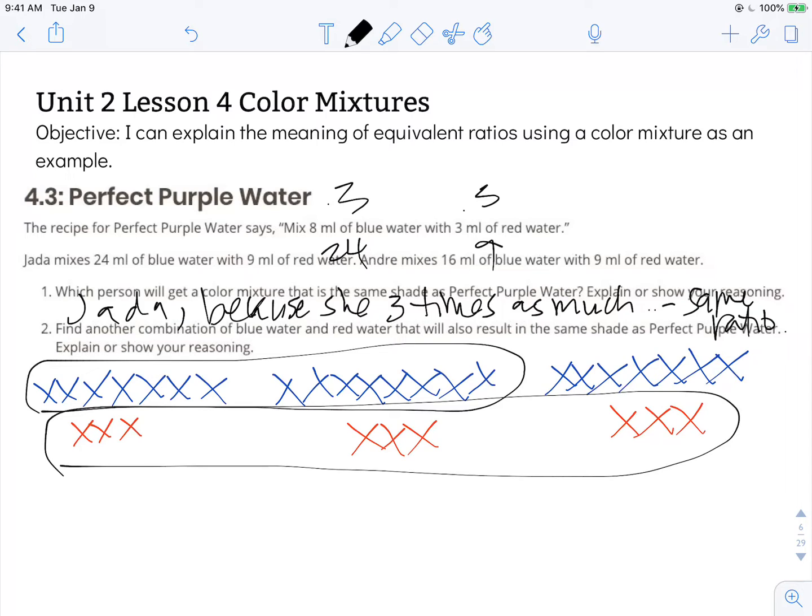It says find another combination of blue water and red water that will also result in the same shade as perfect purple water. Explain or show your reasoning.